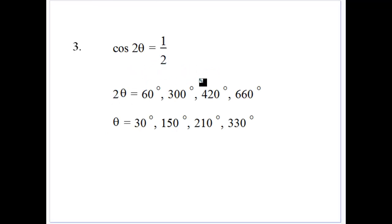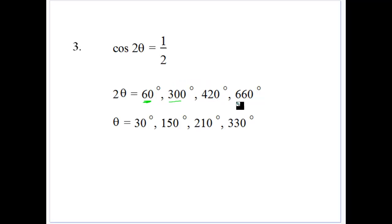Cos of 2 theta is equal to 1 half. The related angle there would be 60 degrees, and cosine is positive in the first, the fourth, the fifth, and the eighth quadrant. So in the fourth quadrant we'd take 60 away from 360, giving us 300. Then for the other two quadrants, we add 360 to both of those solutions: 360 plus 60 gives you 420, and 360 plus 300 gives you 660. So there are our two other solutions for our two revolutions. Then we divide by 2: 60 divided by 2 gives you 30, 300 divided by 2 gives you 150, 420 divided by 2 gives you 210, 660 divided by 2 gives you 330. All our solutions are between 0 and 360.